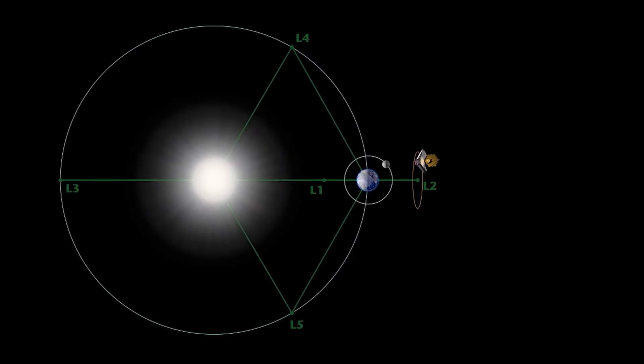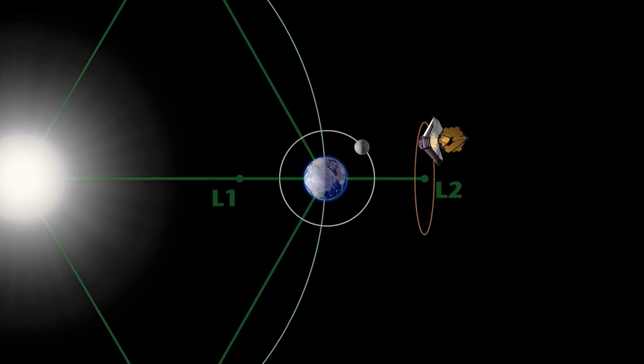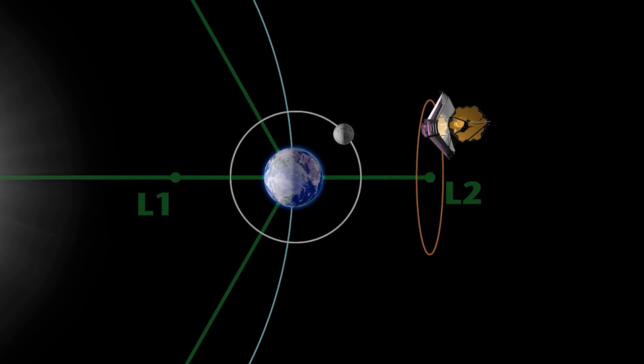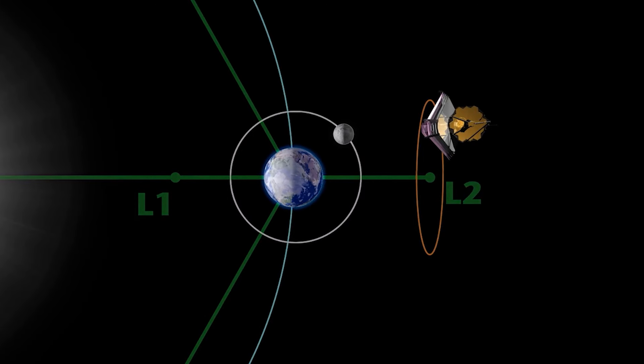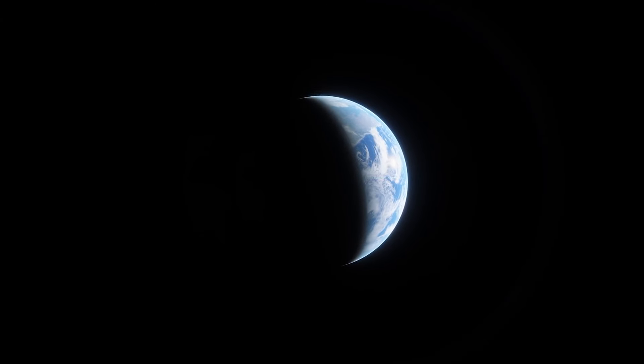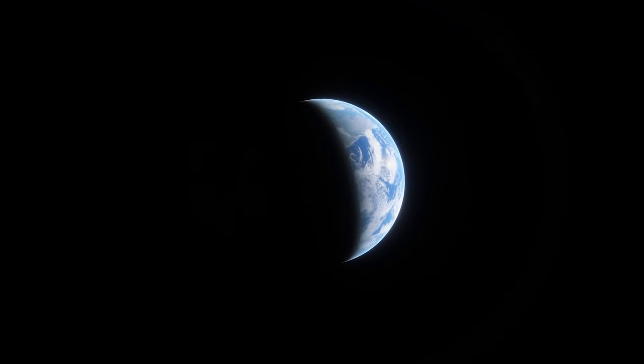In addition, JWST's orbit around the Earth aligns with the orbit of Proxima b, allowing full observations of its urinal and nocturnal cycles in 11.2 Earth days.